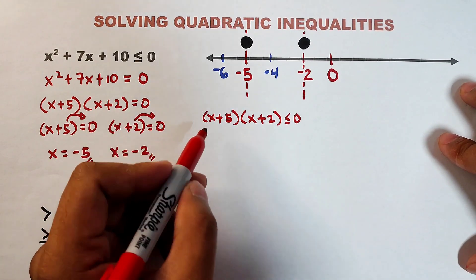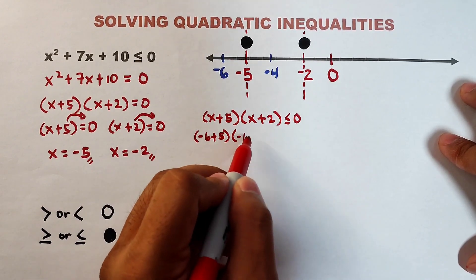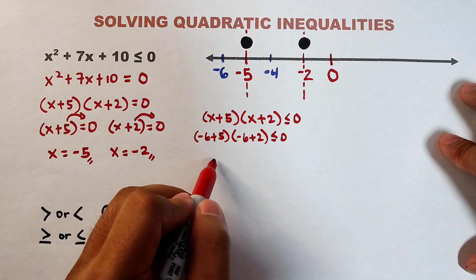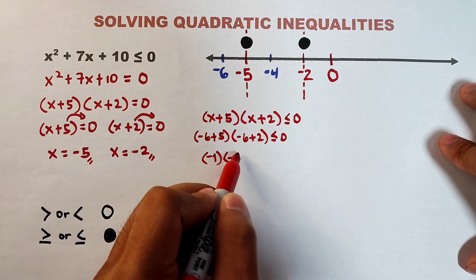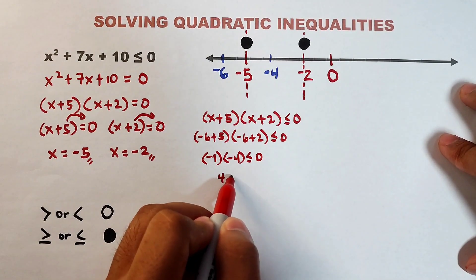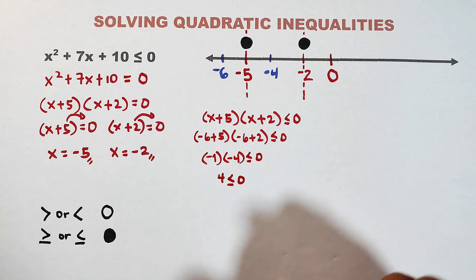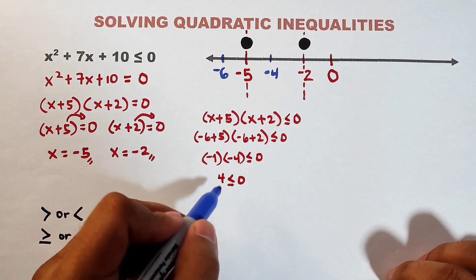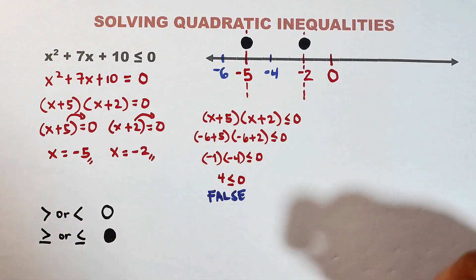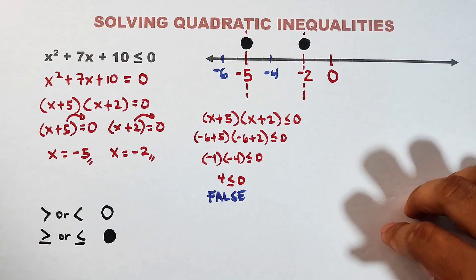First, let's check x = -6: (-6 + 5)(-6 + 2) ≤ 0 becomes (-1)(-4) ≤ 0, which is 4 ≤ 0. Is 4 less than or equal to zero? Definitely this is a false statement, meaning that the region represented by -6 is not part of our solution.